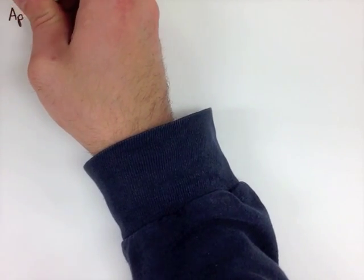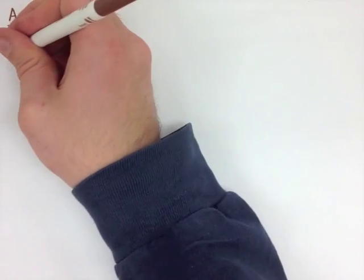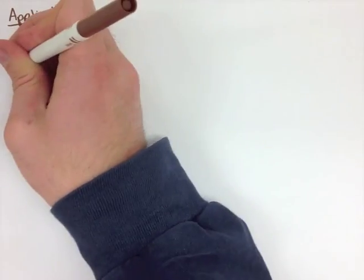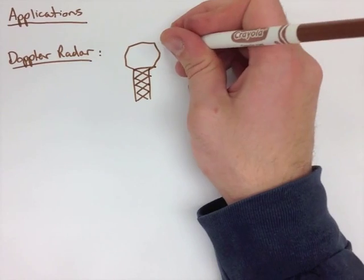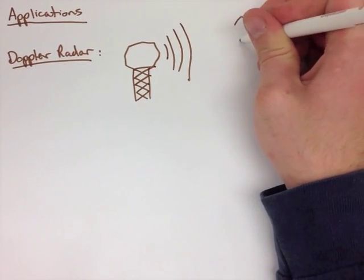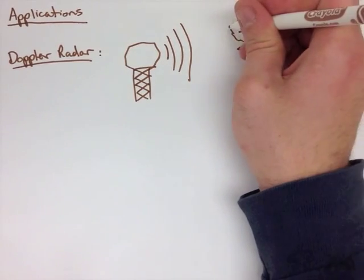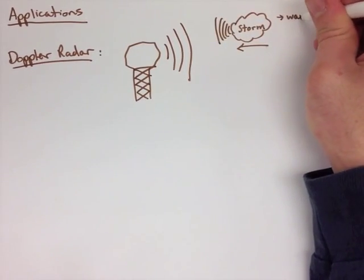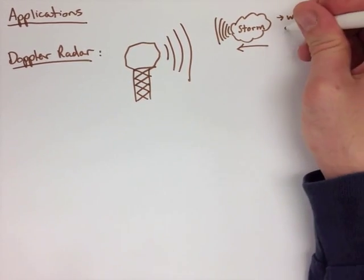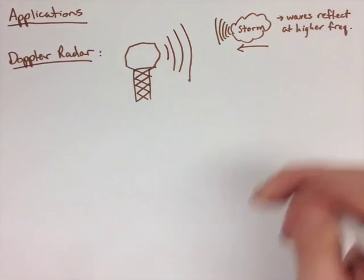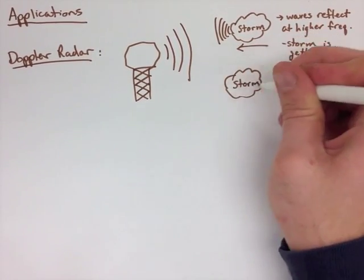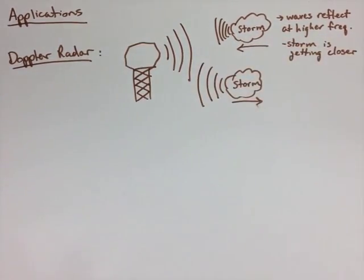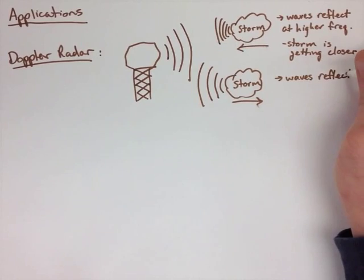A couple applications that we can look at that use the Doppler effect are Doppler radar and the expanding universe. Doppler radar works with a radar station that sends out some waves. If there's a storm cloud that's moving towards the radar, those waves are going to get bunched up. The waves are going to reflect at a higher frequency, and then we know the storm is actually moving closer. If that storm cloud is moving away from the Doppler radar station, those waves are going to reflect at a lower frequency, and we're going to find out that the storm is moving away because the waves are further apart.